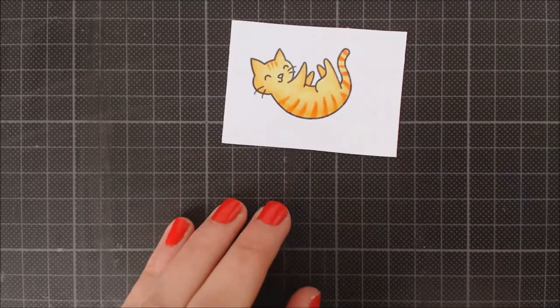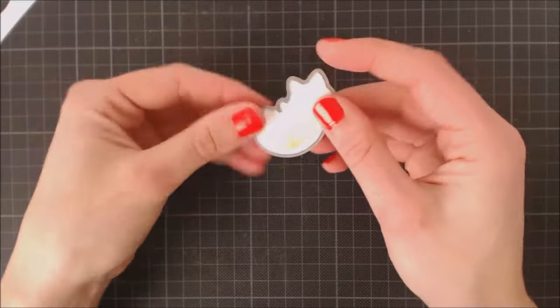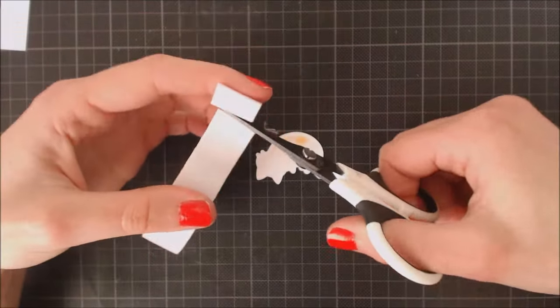Now I'm going to use the coordinating die to cut it out and add some foam adhesive to its back to attach it to my card.